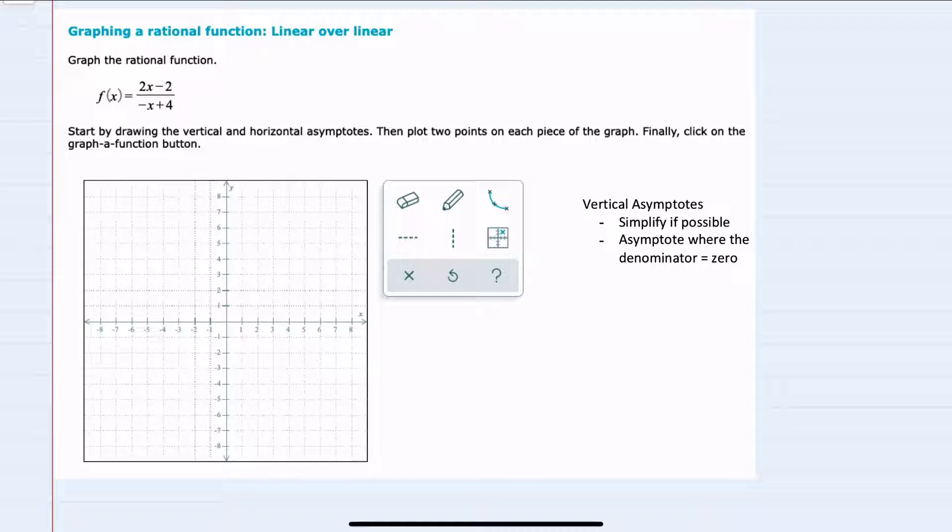For vertical asymptotes, we want to first simplify if possible. And for this expression, I see that I could factor out a 2 from the numerator. However, even after factoring, I don't have factors that can cancel. So we can say that this is simplified as much as possible. And then the vertical asymptote will be where that denominator equals 0.